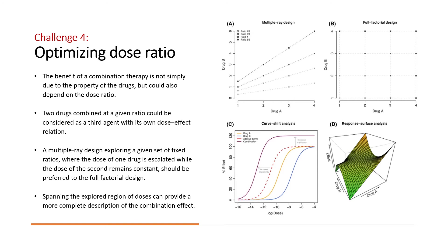Spanning the explored region of doses can provide a more complete description of the combination effect. Ideally, the dose ratio should be optimized in preclinical studies before proceeding to clinical testing in humans.